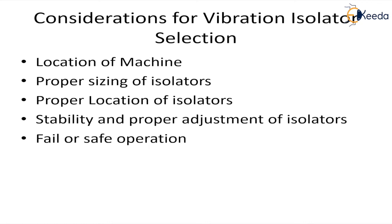Considerations for selecting a vibration isolator system include: first, the location of the machine — it is always desirable to locate the machine as far as possible from sensitive areas, or on a rigid foundation, meaning the ground floor is the best possible location. Second, proper sizing — isolators are a combination of spring plus damping material, so proper stiffness should be selected and sufficient travel should be provided for the vibrations.